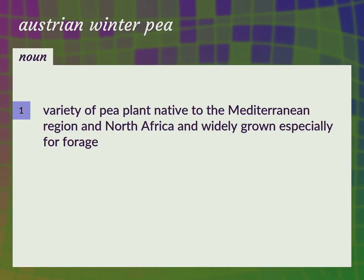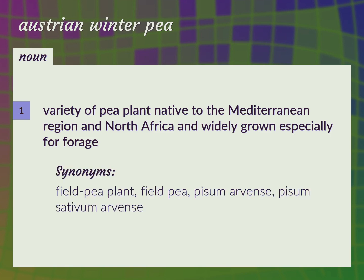Variety of pea plant native to the Mediterranean region and North Africa, and widely grown especially for forage. Field pea plant, field pea, Pisum sativum var. arvense.